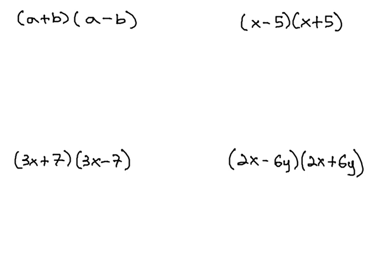In this video, we're going to take a look at a multiplication shortcut called sum and difference. To set this up, let's look at this first problem on the top left: a plus b times a minus b. Notice these are exactly the same, except one has a plus and one has a minus. This is where we get the name sum and difference from.